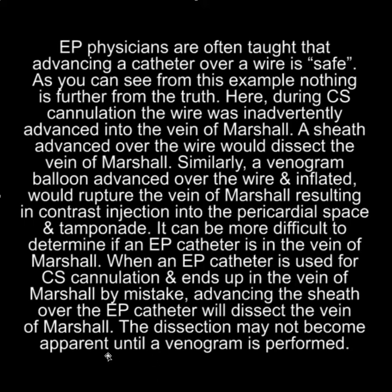Similarly, a venogram balloon advanced over the wire and inflated would rupture the vein of Marshall, resulting in contrast extravasation into the pericardial space and tamponade. It can be more difficult to determine if an EP catheter is in the vein of Marshall than a wire, because it's stiffer. When an EP catheter is used for CS cannulation and ends up in the vein of Marshall by mistake, advancing the sheath over it will dissect the vein of Marshall.